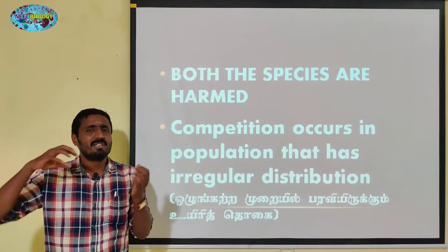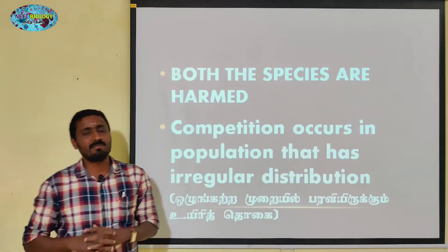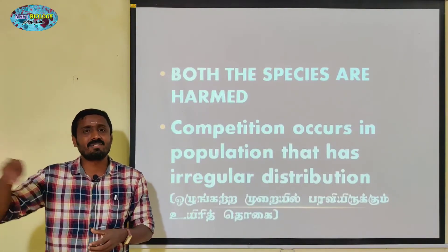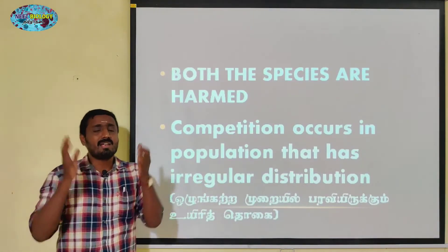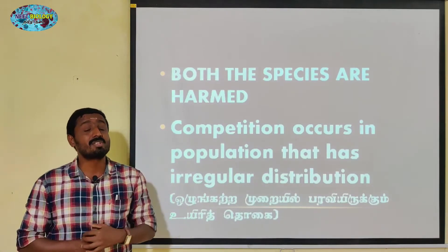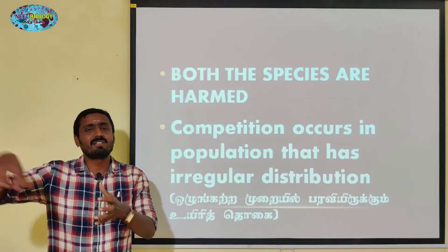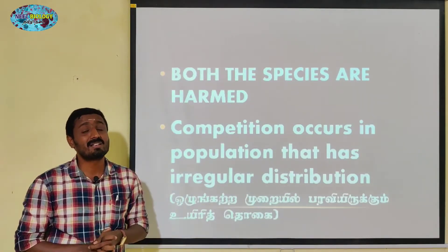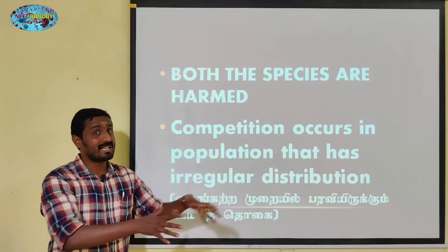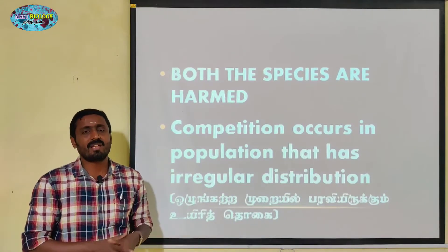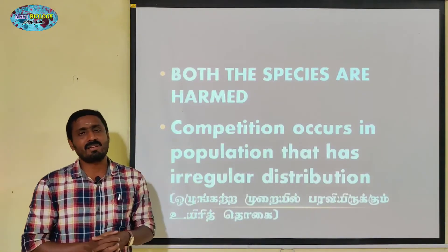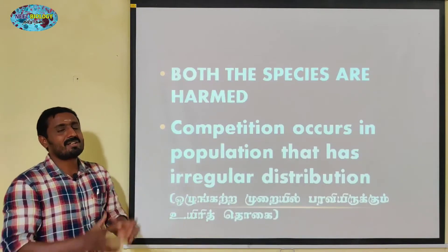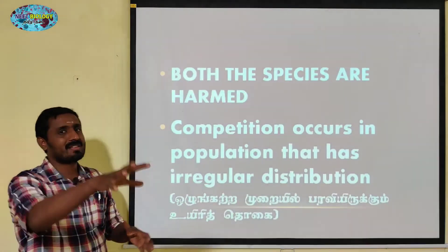Food, shelter, and society create many problems when there is a large population. When population is high, there are not enough nutrients, and water and sunlight also become limiting. Sunlight, water, and nutrients are the key resources for plants.